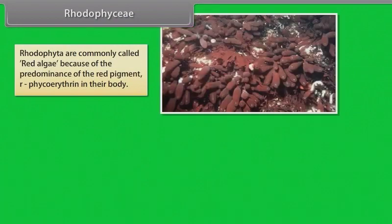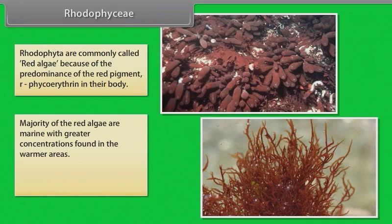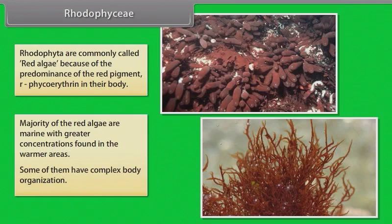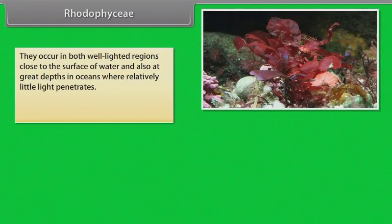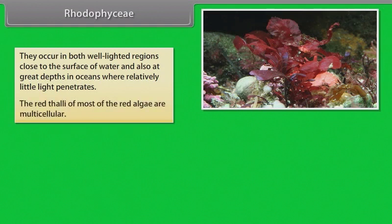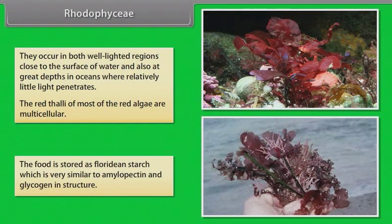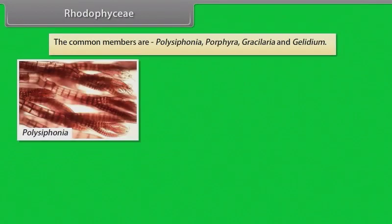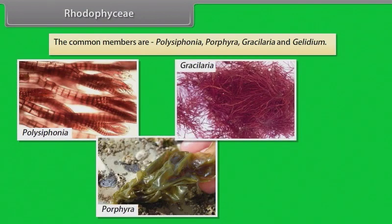Rhodophyta are commonly called red algae because of the predominance of red pigment or phycoerythrin in their body. Majority of red algae are marine with greater concentrations found in the warmer areas. Some of them have complex body organization. They occur in both well-lighted regions close to the surface of water and also at great depths in oceans where relatively little light penetrates. The red thalli of most of the red algae are multicellular. The food is stored as floridean starch which is very similar to amylopectin and glycogen in structure. The common members are polysiphonia, porphyra, gracilaria and gelidium.